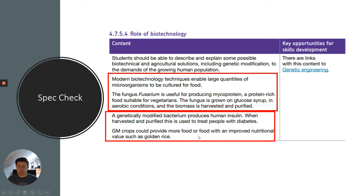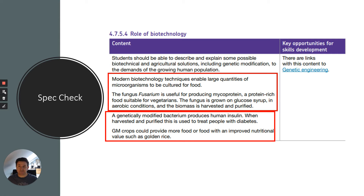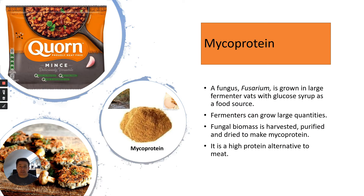I'm not going to cover GM bacteria producing human insulin — that's in another topic related to genetic engineering, which for my students will be one of the final topics in year 11. In certain parts of society there is a very big interest in not eating as much meat or fish, and in fact going vegetarian or even vegan.